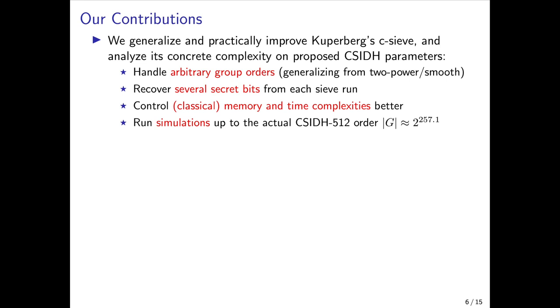Finally, one nice aspect of these quantum sieves is that they can be classically simulated on regular computers, and we do so up to the actual CSIDH-512 group order, which is about 2^257. Previous work had only been able to do such simulations for group orders up to about 2^100.